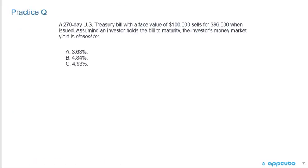Another excellent question to convert between yields. A 270-day U.S. Treasury bill has a face value of 100,000 and sells for 96,500 when issued. Assuming the investor holds the bill to maturity, the money market yield is closest to: A, 3.363%; B, 4.84%; or C, 4.93%.